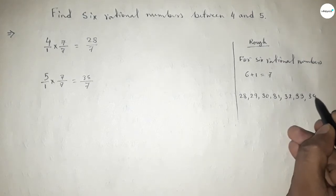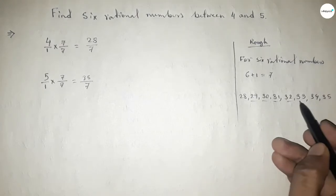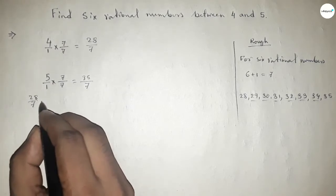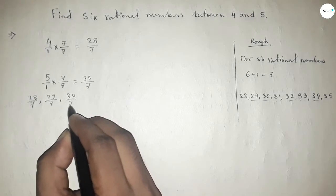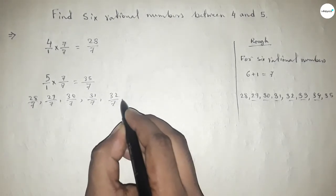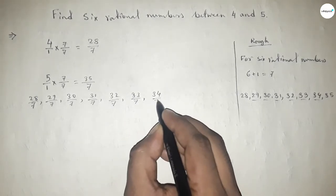And by these natural numbers we can form six rational numbers. Okay, here all the rational numbers are 28/7, 29/7, 30/7, up to 35/7.